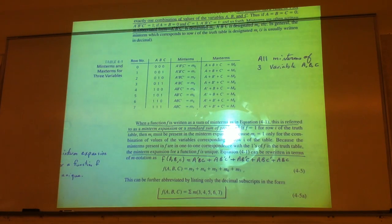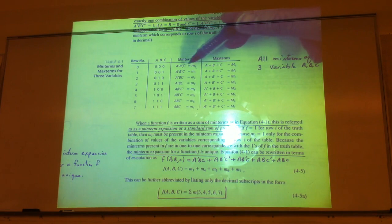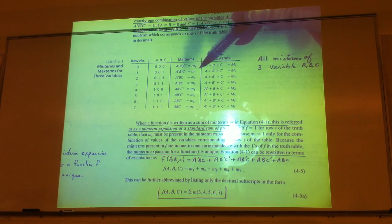So that's the max term and min term expansion of functions. A student asks: does it mean that for min terms we assume that a, b, c are initially one? The instructor replies: yes, the regular (uncomplemented) variables are one — that's how we define the min terms.